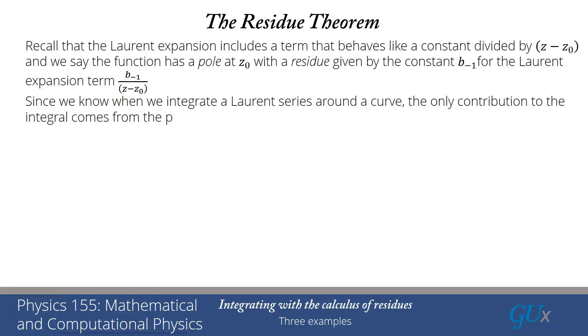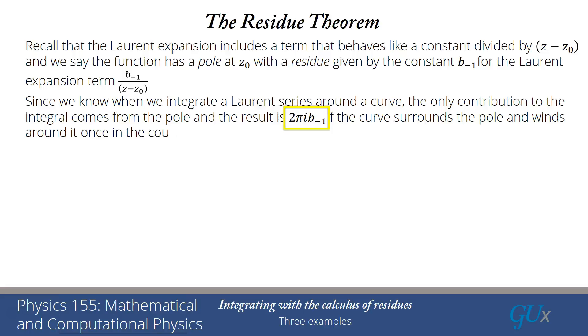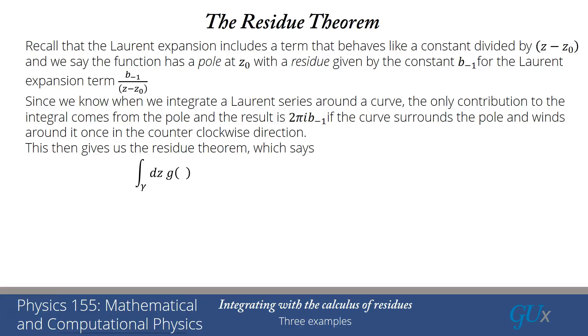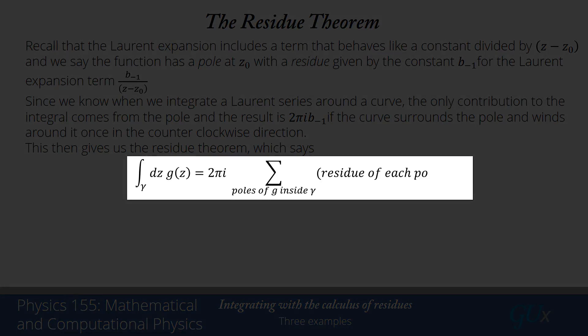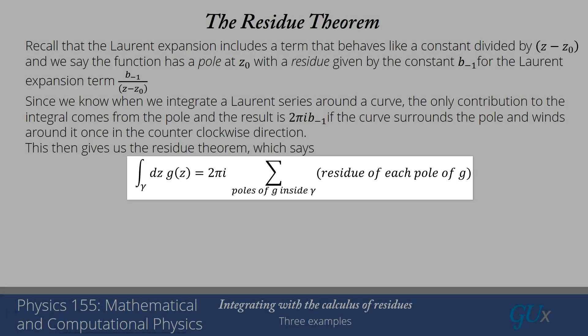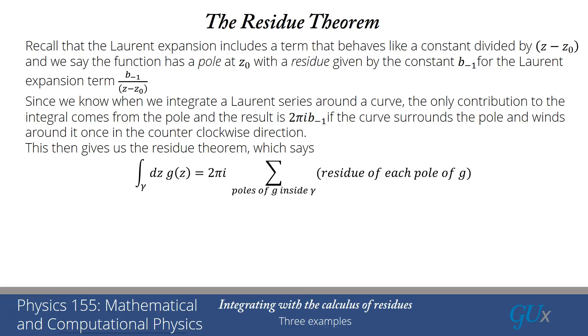So if we integrate this Laurent series around a closed curve, the only contribution comes from the pole, and the result is just 2πi times the strength of the pole, b₋₁, if the curve completely encircles the pole and winds around it once in the counterclockwise direction. This gives us the residue theorem, which says that the integral over a closed path of a function g(z) equals 2πi times the sum over all poles of g lying inside the curve γ of the residue at each pole. We just sum up all the residues, multiply by 2πi, and that equals the integral.